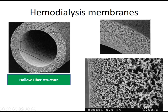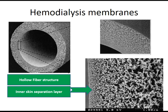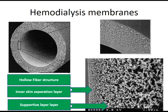Each fiber has a hollow structure for the blood pathway and a wall. The internal diameter and wall thickness are visible in the cross-section. In the wall, there is a separation layer — the inner skin separation layer is the most important layer for sieving, determining which solutes or molecules can pass — and a supportive layer.